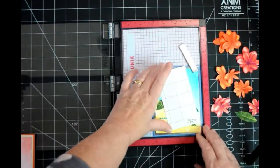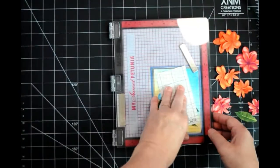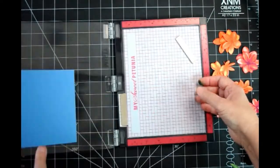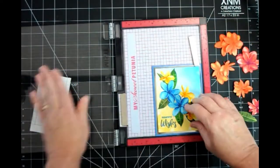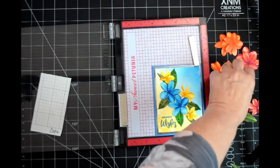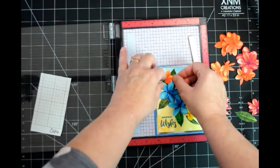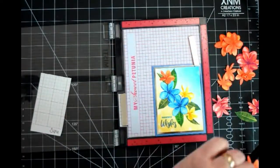Still using the blue and yellow card as a template, readjust the sticky grid so all three small flowers are covered. Repeat the same process that was done before with all of the leaves.